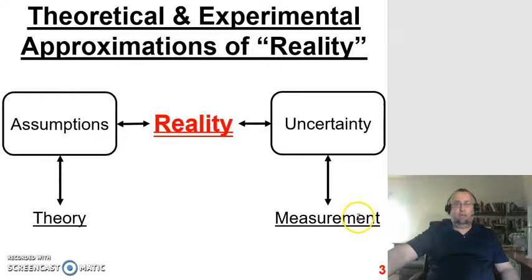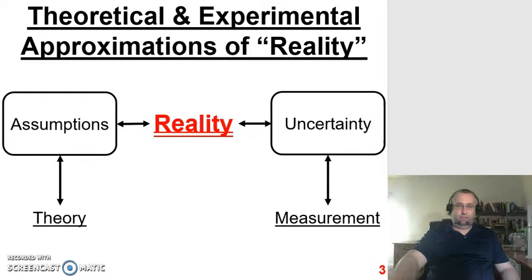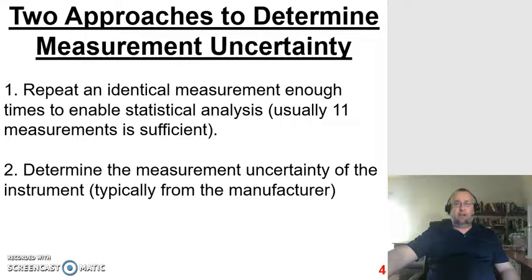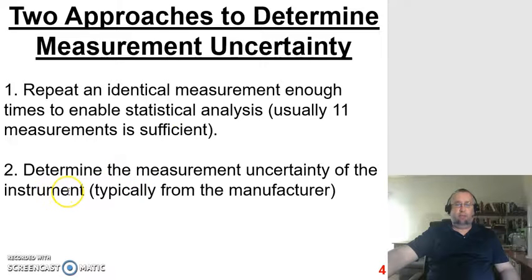The next slides describe how to calculate this uncertainty value and how to report it when writing laboratory reports. There are two approaches to determine measurement uncertainty. The first is to take repeat identical measurements and take enough of them to run statistical analysis — calculating an average and a standard deviation. The second approach is to determine the measurement uncertainty of an instrument, typically from the manufacturer, which will be covered in another set of lecture notes.